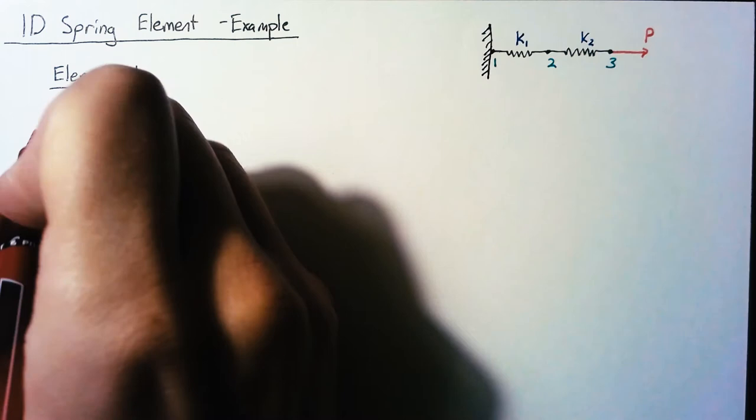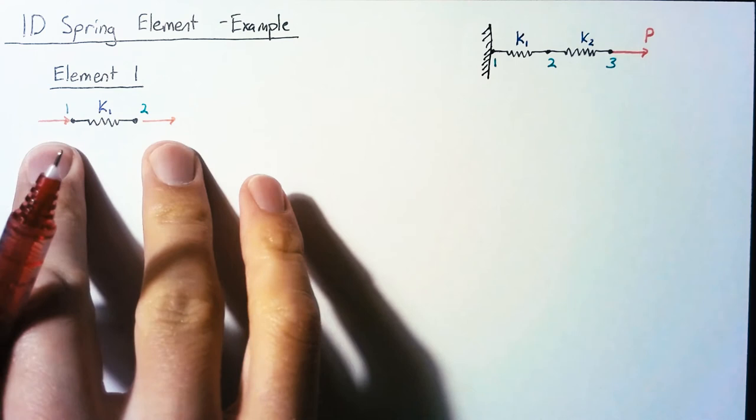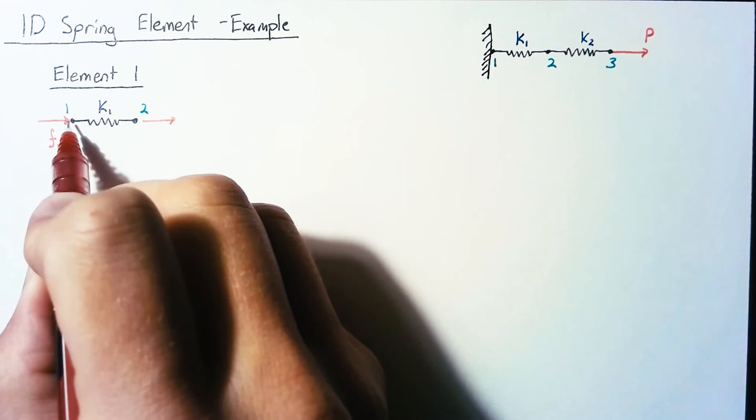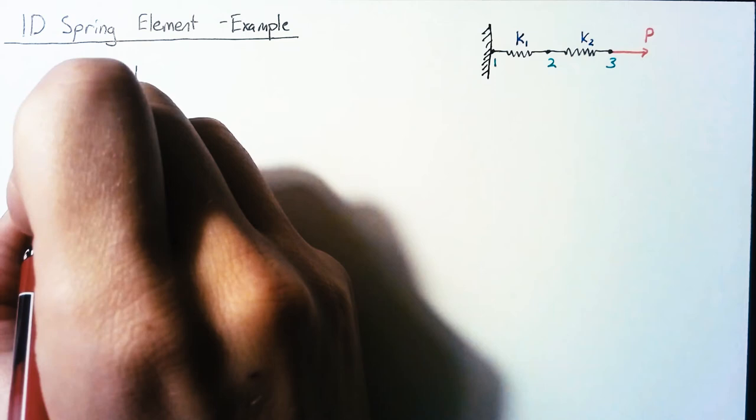We need to indicate both the node that is being acted upon, and we also need to note which element that force is applied to. So this is going to be F1 on element 1 and F2 on element 1.